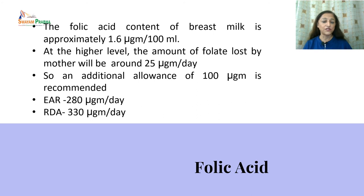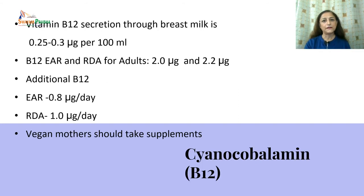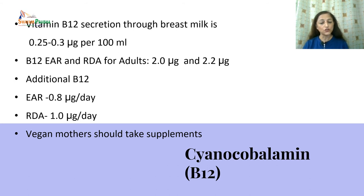Folic acid content of breast milk is around 1.6 micrograms per 100 ml. At higher levels, the amount of folic acid lost by the mother would be around 25 micrograms daily, so an additional allowance of 100 micrograms is recommended. The EAR for folic acid is 280 micrograms daily and the RDA is 330 micrograms daily. The amount of vitamin B12 secreted through breast milk is around 0.25 to 0.3 micrograms per 100 ml. An additional EAR of 0.8 micrograms and an additional RDA of 1 microgram of B12 is recommended for the lactating woman.